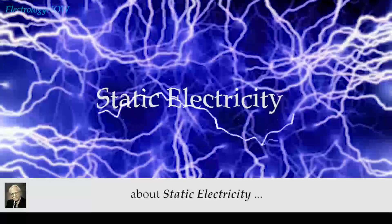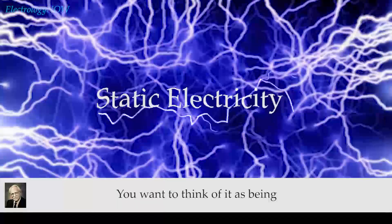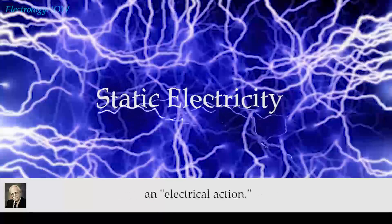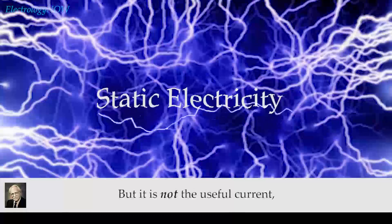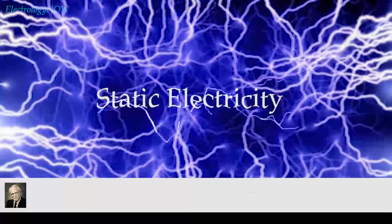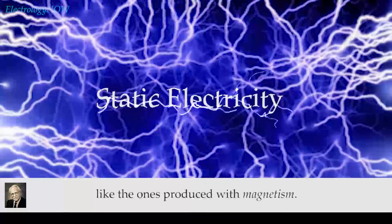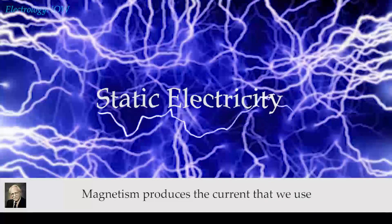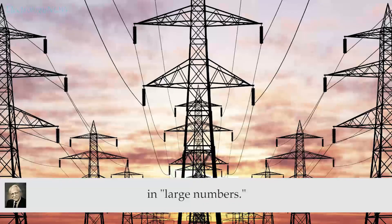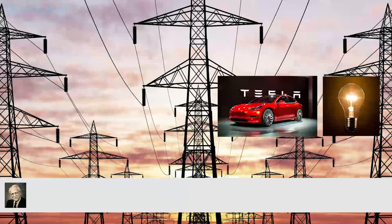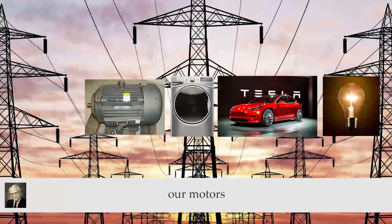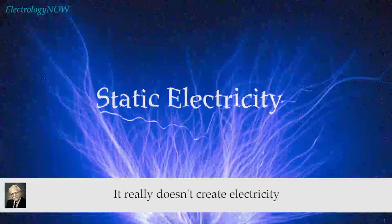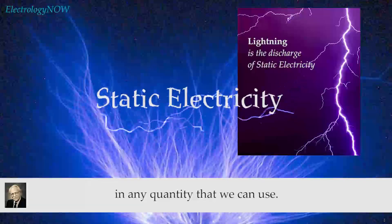There's one thing I wanted to say about static electricity. You want to think of it as being an electrical action, but it is not the useful current like the one produced with magnetism. Magnetism produces the current that we use in large numbers — in other words, to light our lights, to run our machines, our washing machines, our motors. Static electricity really doesn't create electricity in any quantity that we can use.